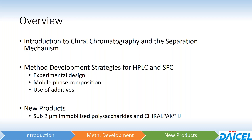Most of our time is going to be spent talking about method development strategies for HPLC and SFC — things like experimental design, mobile phase composition optimization, as well as the use of additives. Time permitting, at the end we'll touch on some new products: our sub-2 micron immobilized polysaccharides for UHPLC and our newest immobilized polysaccharide, ChiroPak IJ.